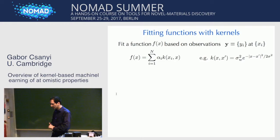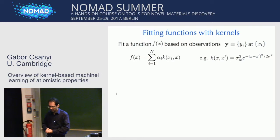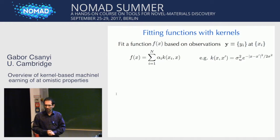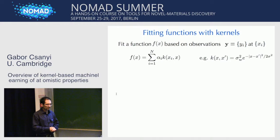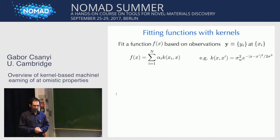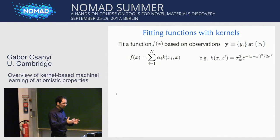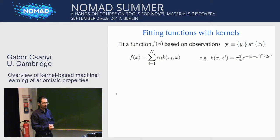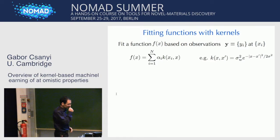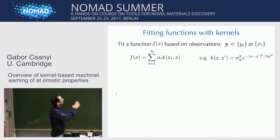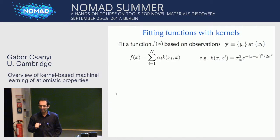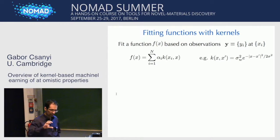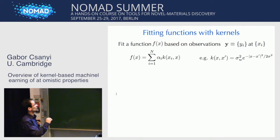I want to give you my one-slide summary of Gaussian process regression, which is a particular machine learning algorithm that today's speakers have used a lot in their research. In fact, many of the tutorials this afternoon are also based on this. It's a little bit of formalizing of the function-fitting type of machine learning that I just mentioned.